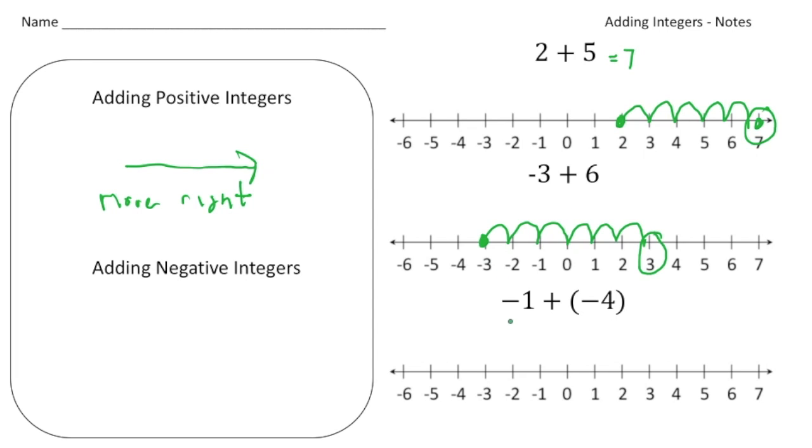Now we have negative 1 and we're adding a negative. So we know that when we add a positive integer, we move to the right. Well, anytime we add a negative integer, we definitely move to the opposite direction or to the left. So we're going to move to the left.